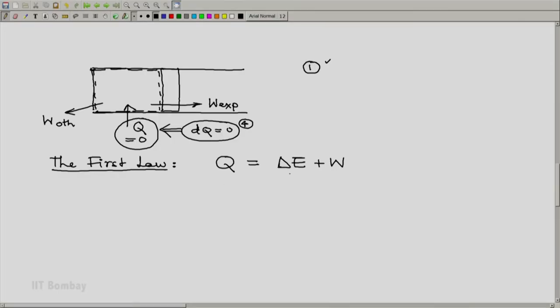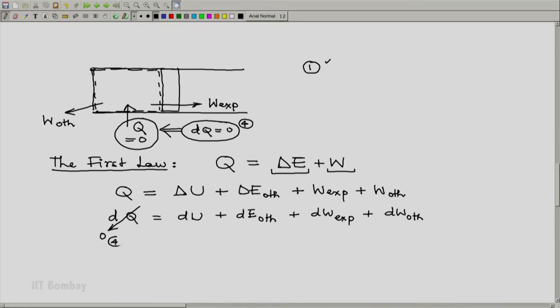Now next step is to expand this. For example, delta E we will expand into its components and W we will expand in its components. So we will get Q equals, the major component for us would be thermal energy, delta U, plus let us write the other components that occur in delta E as delta E other. And W we will split into the expansion work and other type of work. Now let us convert this in differential form. So we will write this as DQ equals DU plus DE other plus DW expansion plus DW other. Now we are given that DQ is zero.